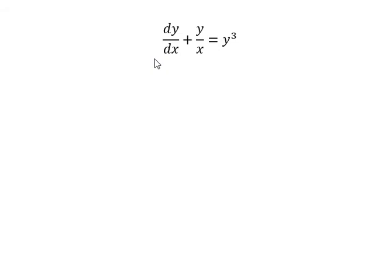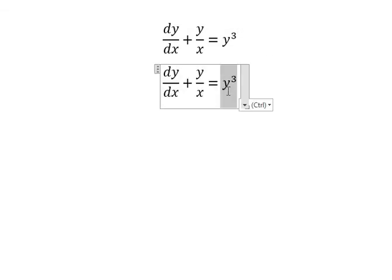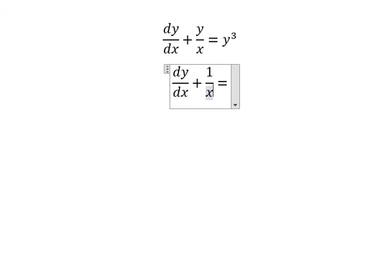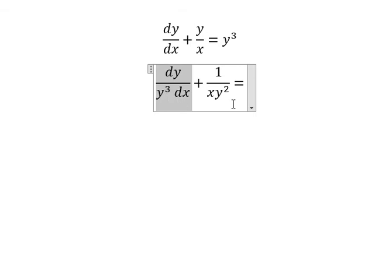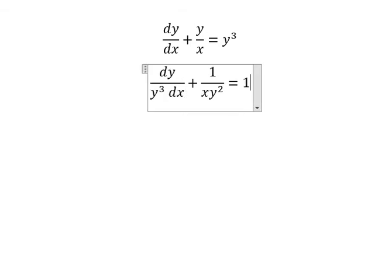Now I want to show you how to answer. We divide both sides by y to the power of number 3. We see that we have 1 over y squared, dy over y to the power of number 3, dx. That is about Bernoulli's equations.